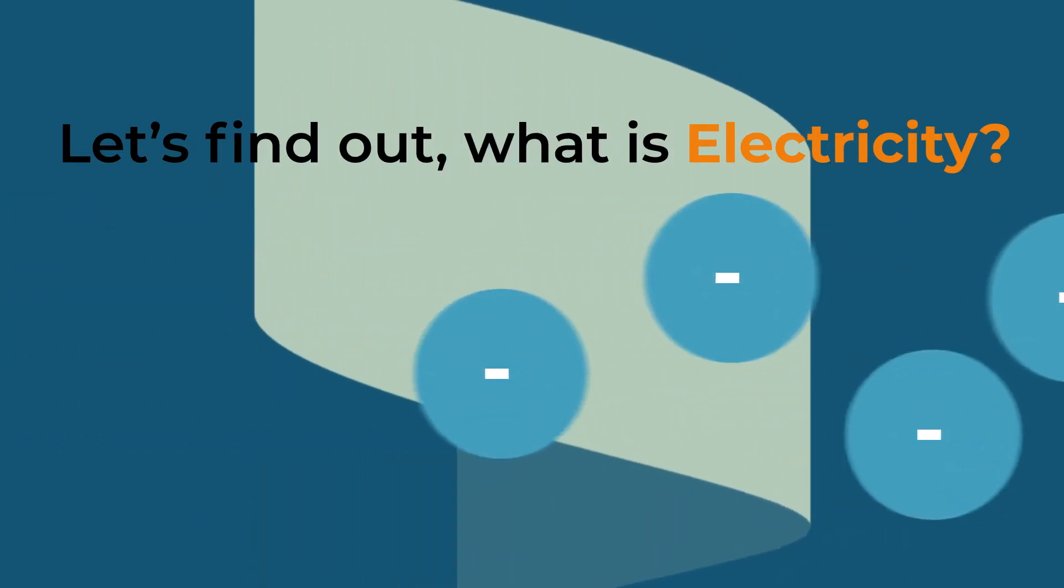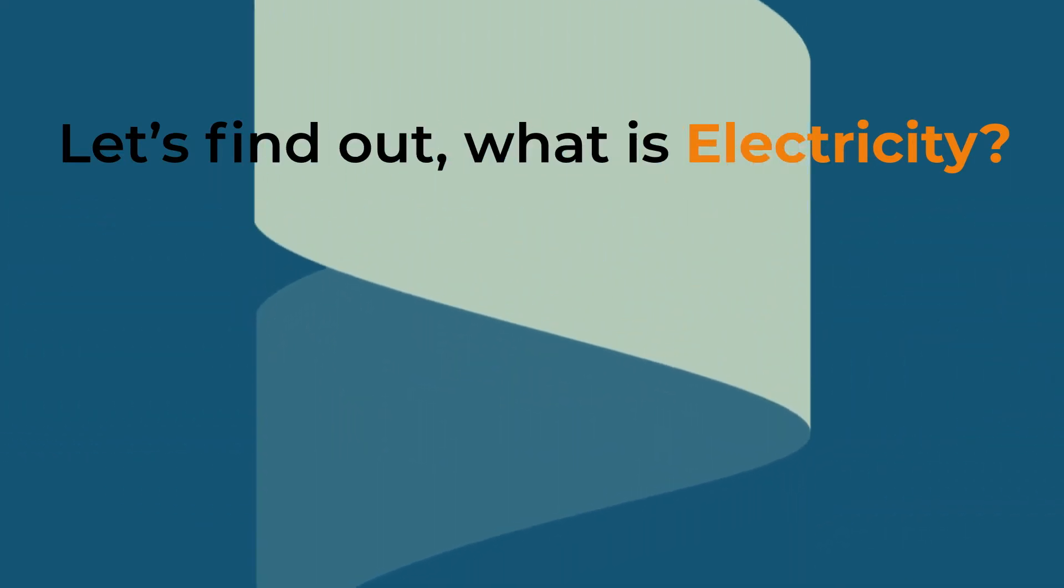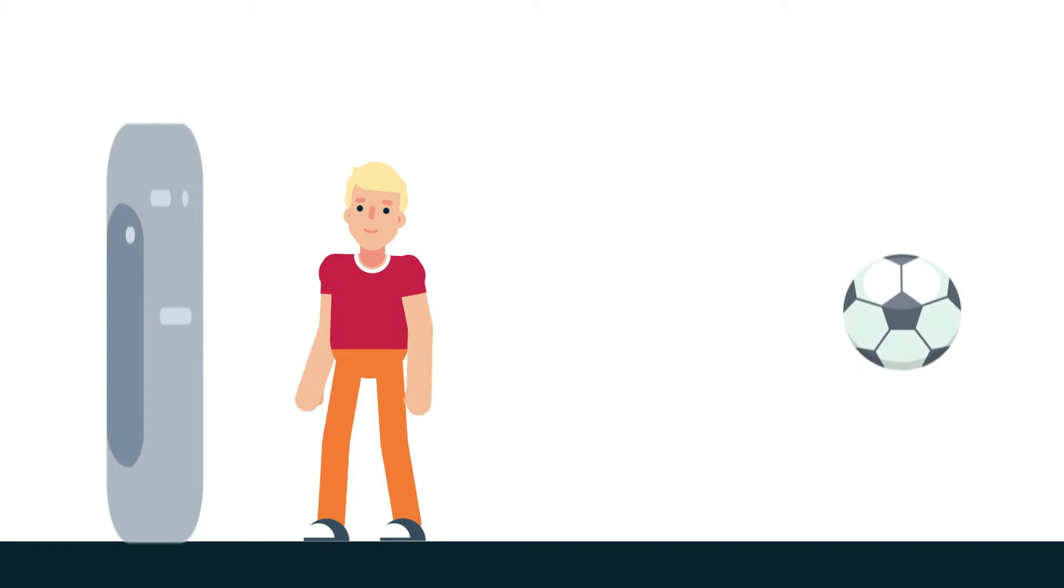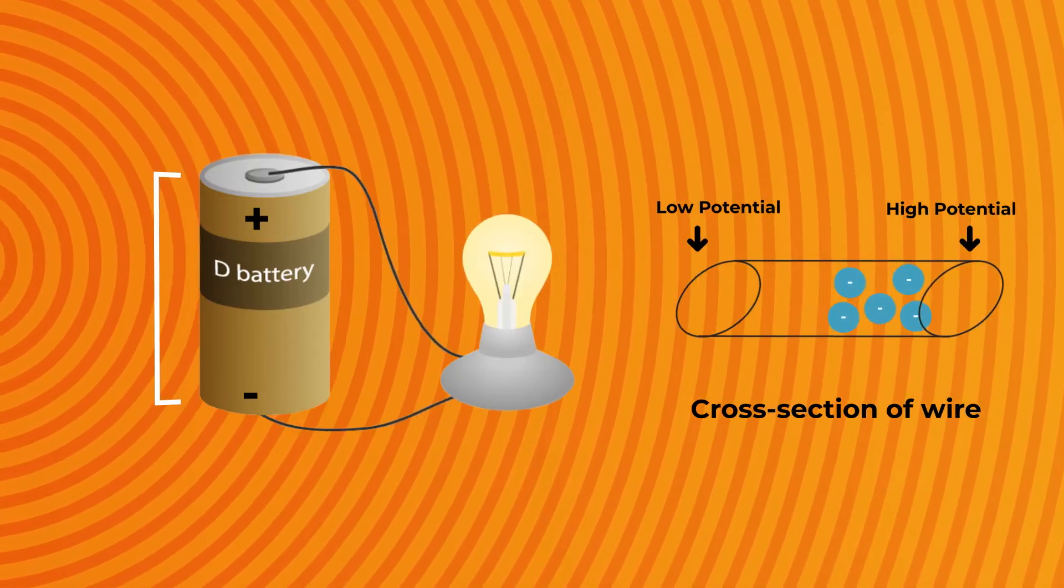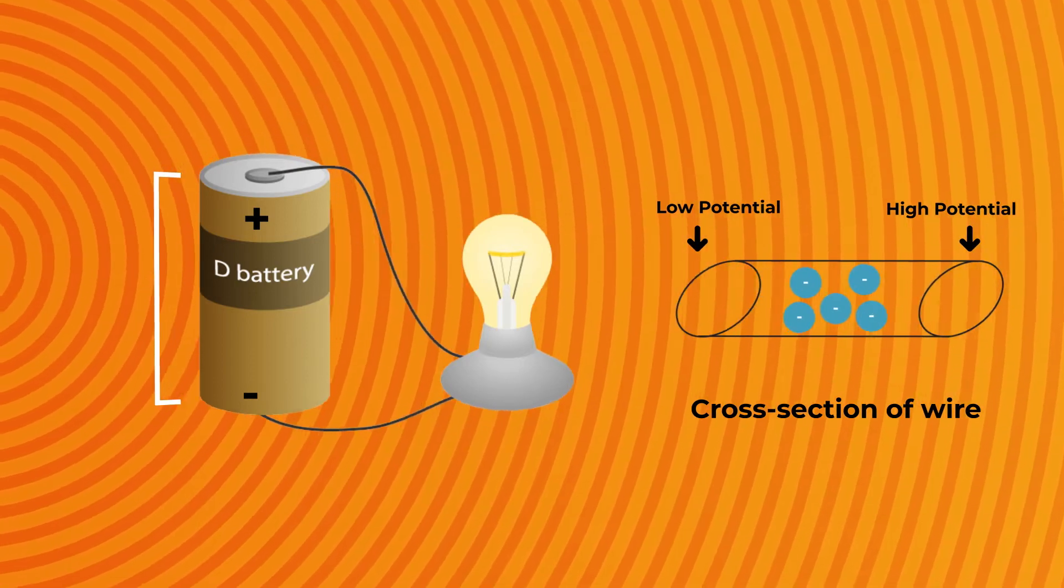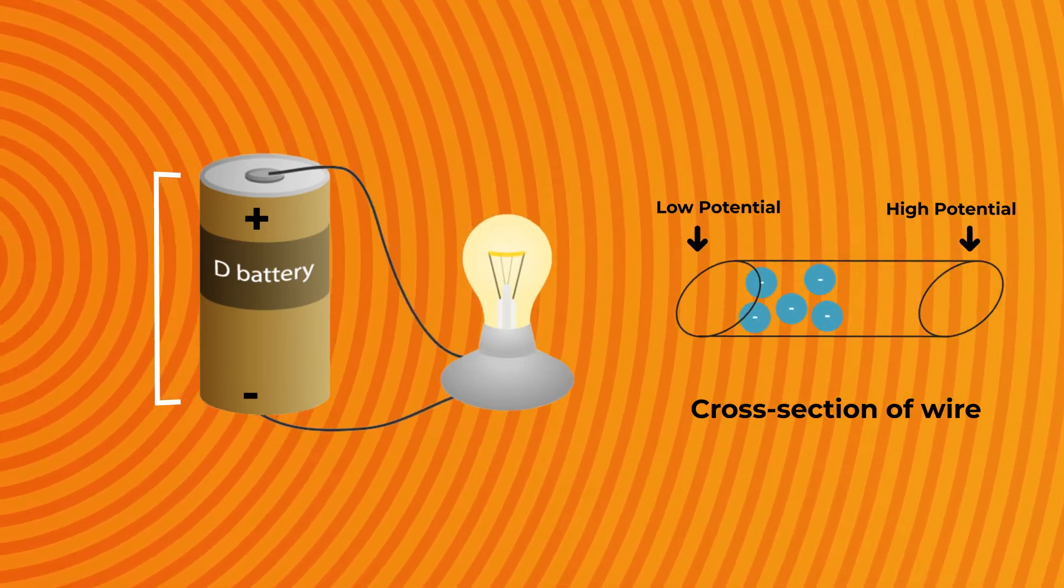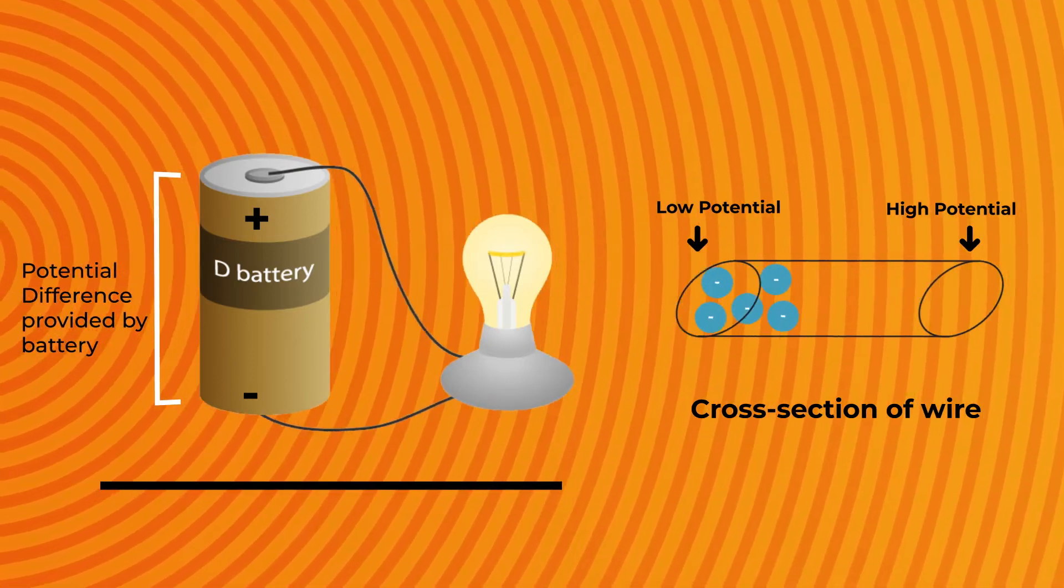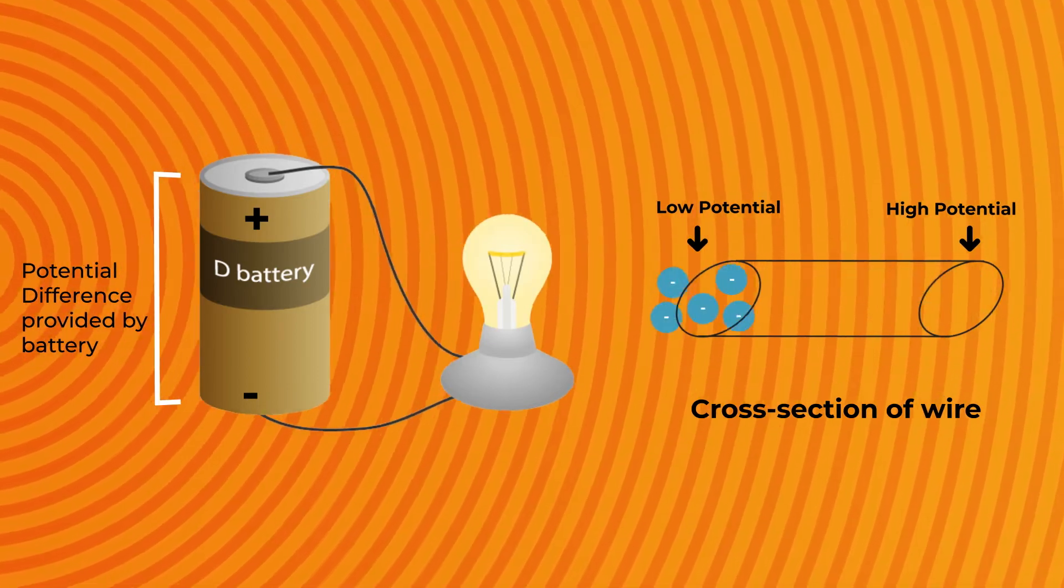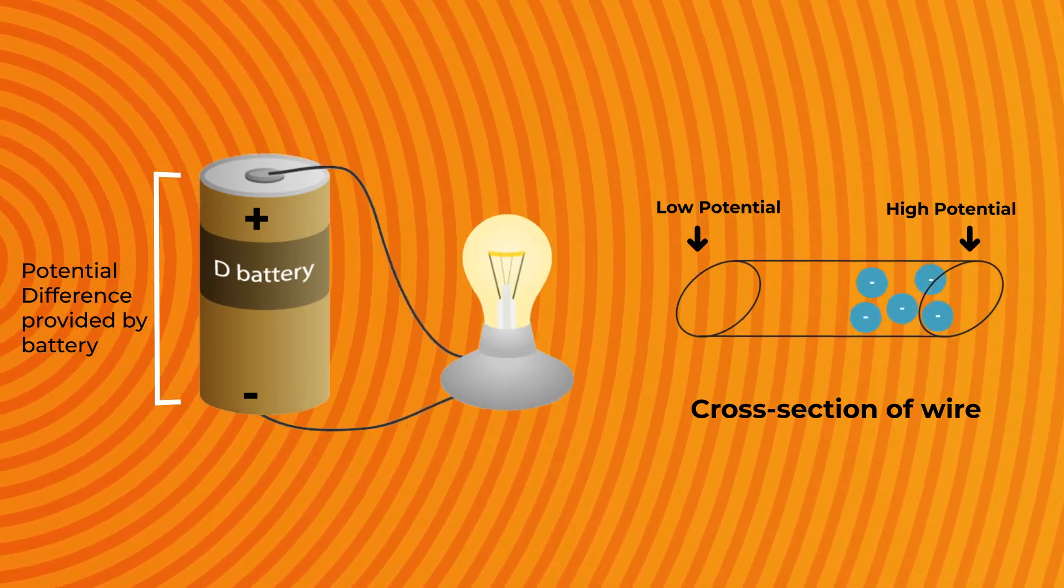When one or more charges move, we call it electricity. To move something, there should be an application of force. In the case of electricity, the potential difference between the ends of a wire applies the force on electrons. When we connect an appliance to a battery or an electric socket, we apply a potential difference.